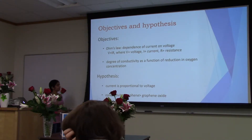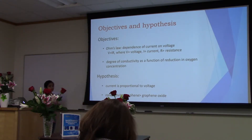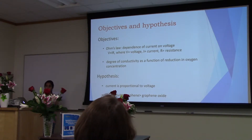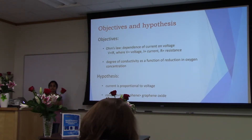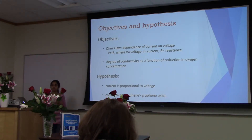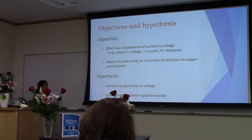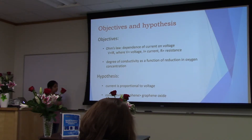The main objective of this work is to look at the degree of conductivity as a function of oxygen concentration. As we change the surface oxygen concentration, we look at how conductivity changes and how the current-voltage relationship works. From Ohm's law, voltage is proportional to current, and we will demonstrate this using MATLAB. We hypothesize that the conductivity of graphene is higher than that of graphene oxide, and that current is proportional to voltage.